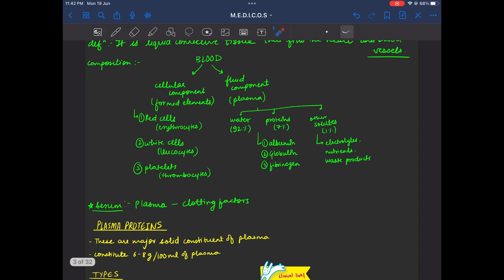In cellular components, there are red cells, white cells and platelets. Red cells are known as erythrocytes. White cells are leukocytes and platelets are thrombocytes.